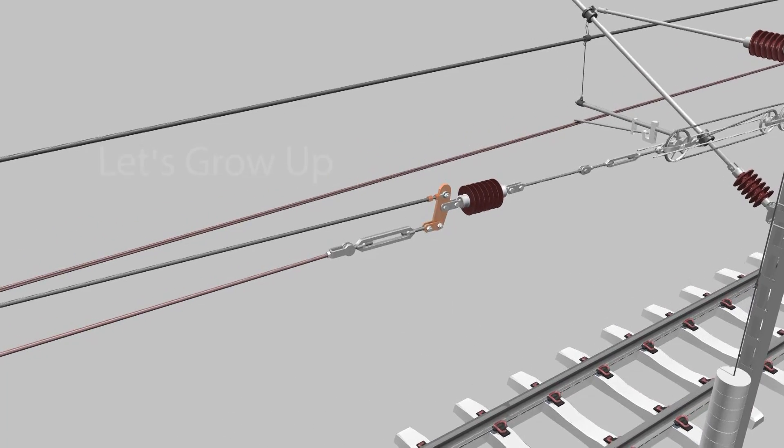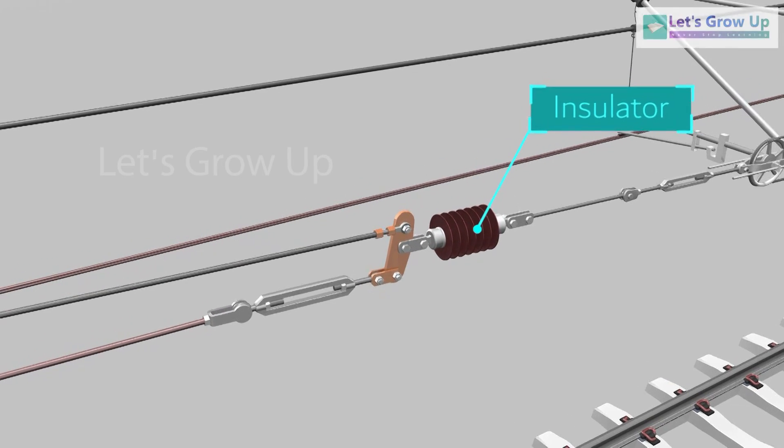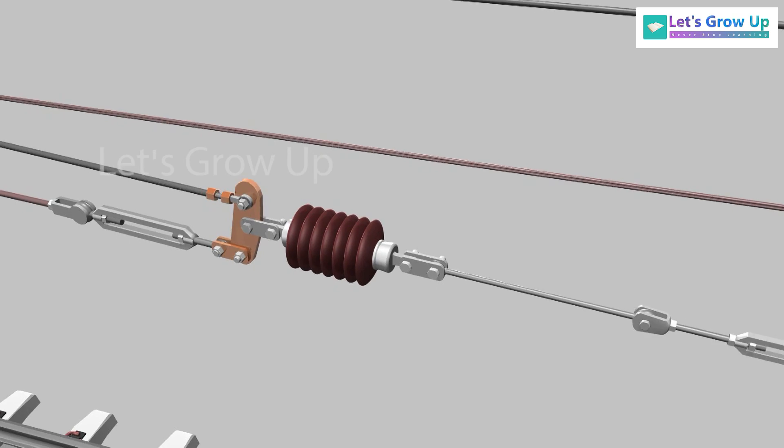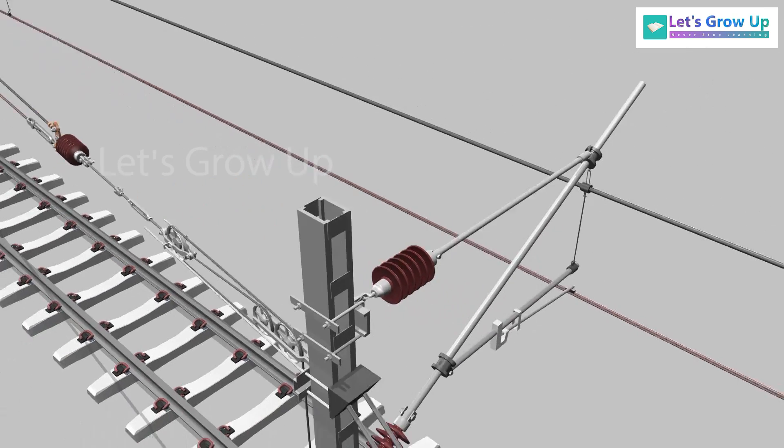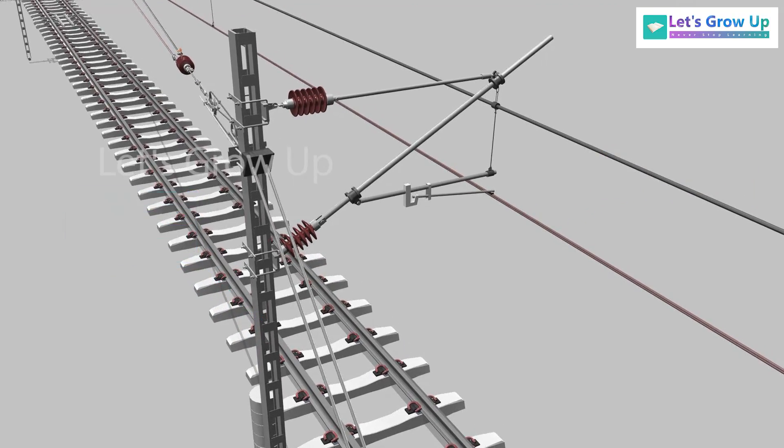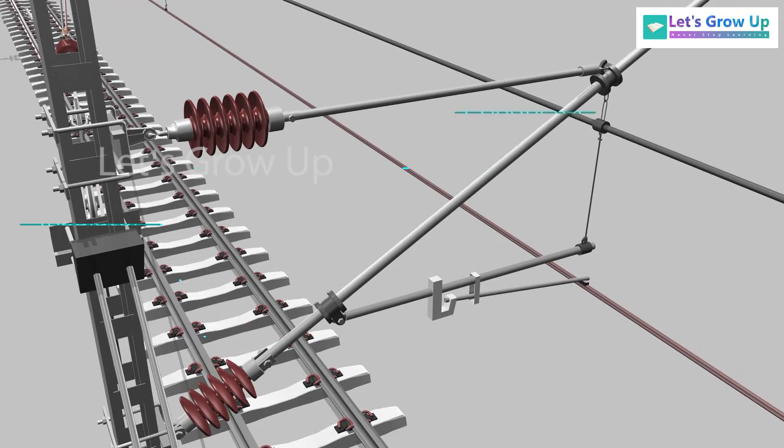The insulators play an important role in railway traction systems. It is used in OHE to provide electrical insulation between the live conductor and the ground support structure. Do you have any idea about conductors and insulators?